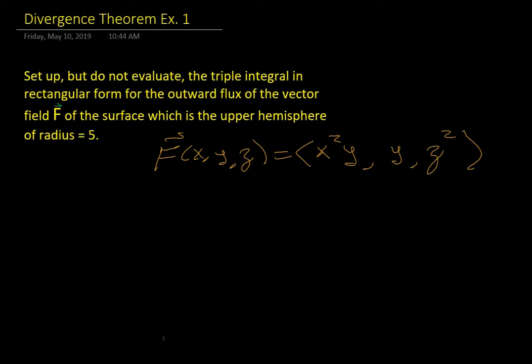Alright, we're going to do another integration example to calculate a physics unit of flux of a vector field through a surface, which is the upper hemisphere of radius 5.